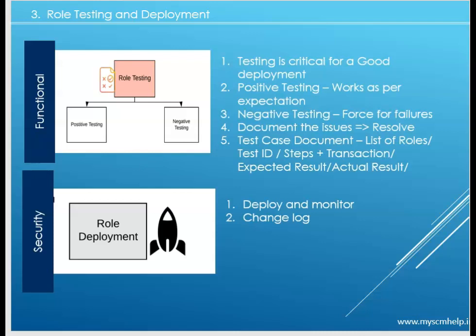It is always better to properly document role testing, just as you do unit testing or integration testing. You need a test case document that states which blueprint number is being tested, which roles, which test IDs, what test steps are performed per transaction code, the expected result, actual result, and test status — pass or fail. This is how you completely test all created roles, especially for complex multi-country rollouts. Any issues must be logged, remediated, and retested.